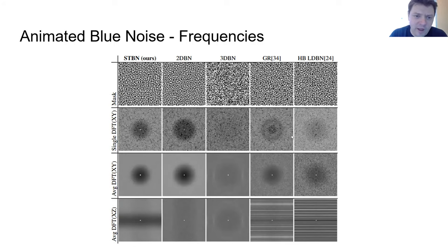A common way to animate blue noise before spatial temporal blue noise has been around has been to use a flip book of independent 2D blue noise textures, which we can see in the second column. It's good over space, but over time it's just white noise. 3D blue noise is good as neither over space nor over time.